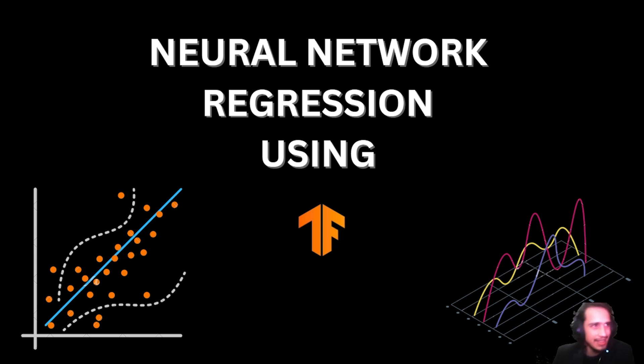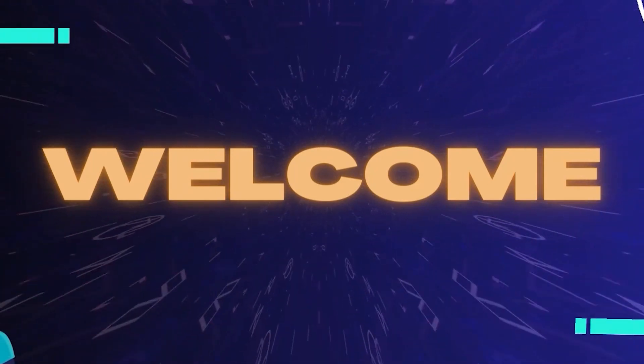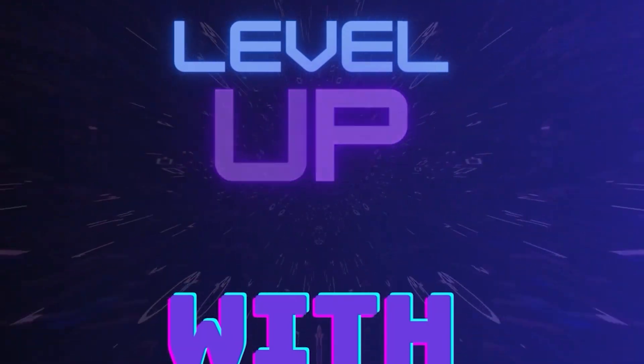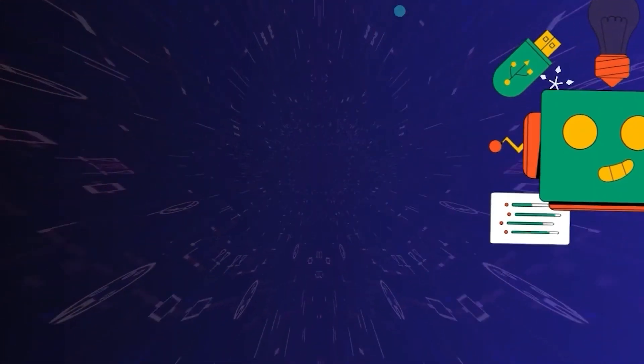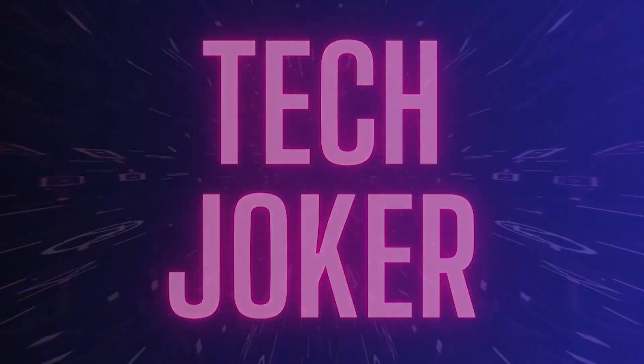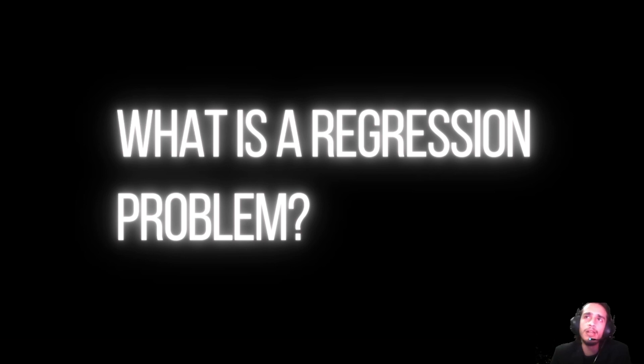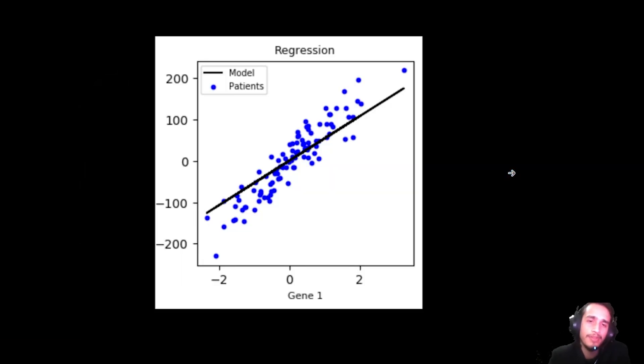Before starting neural network regression, first of all, what is a regression problem? Some teachers say that in regression problems we have independent variables and we want to plot a line. This is boring stuff. It makes sense, but if you are new to coding it doesn't make sense.